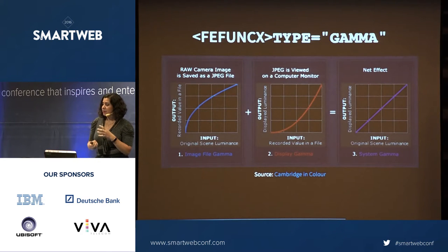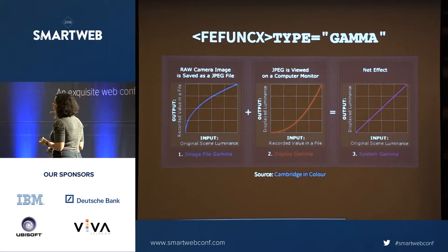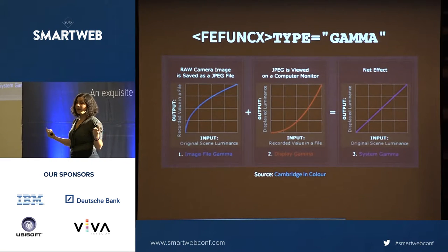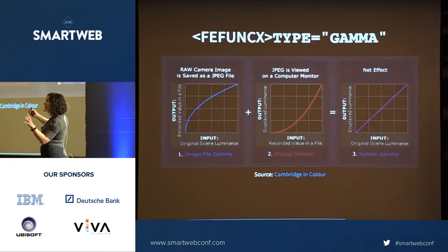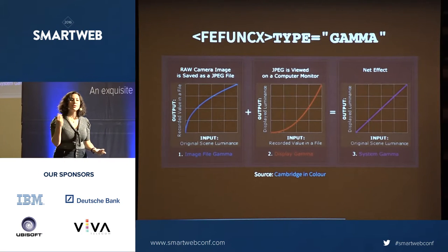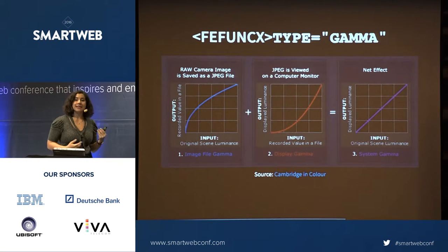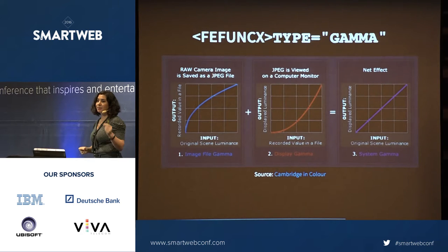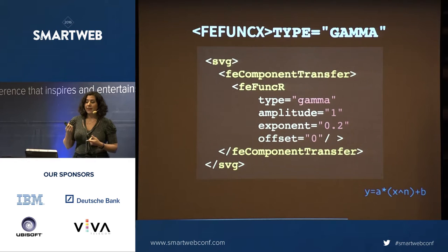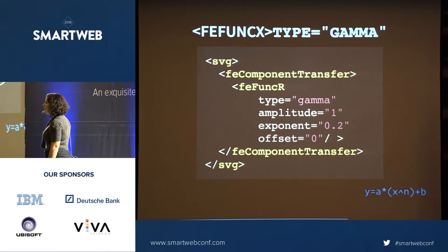Gamma sort of works like this on the luminosity channel, which is probably the most common. We use gamma correction because the way our eyes see the world, the way a camera sees it, and the way a computer screen sees it are three different things. Like hiking with a friend backlit by bright sun — to your own eyes you can see their features, your camera can't. Gamma correction allows us to alter the pixels intermediate of the black and white values and lighten that image. You have amplitude, exponent, and offset as possibilities with SVG, using FE Component Transfer to compose the red channel.